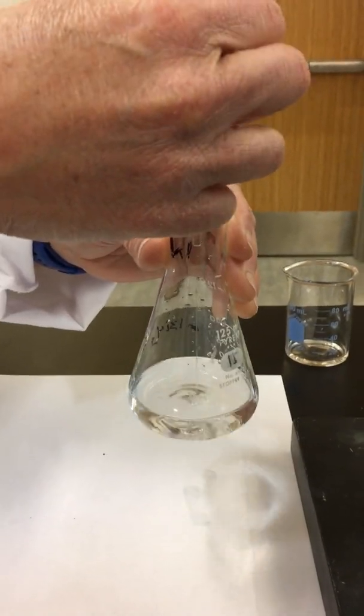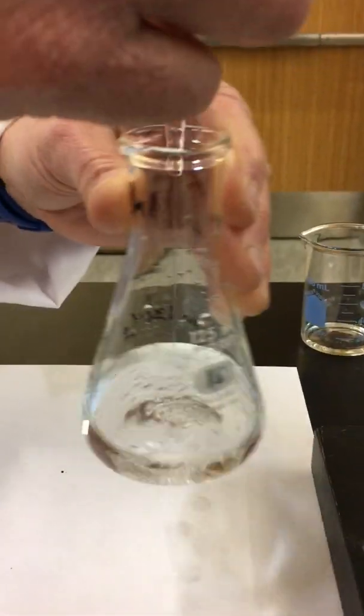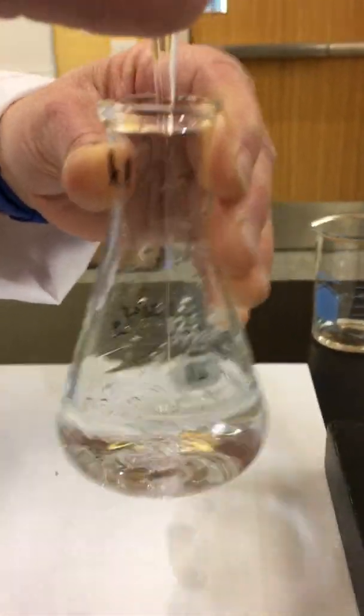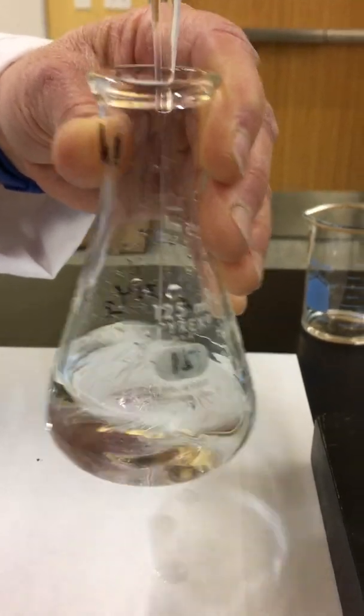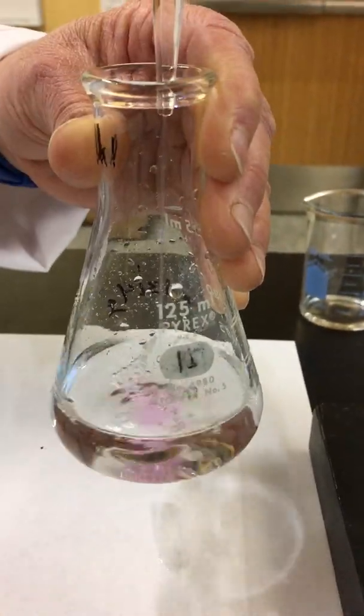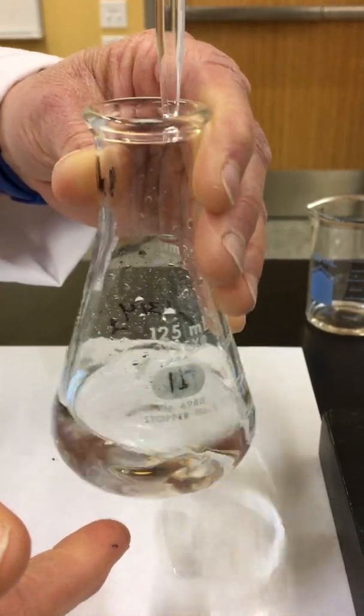We're slowly going to start adding our sodium hydroxide to our oxalic acid. Notice initially, I'm going pretty fast, and the reason is you don't really see any pink color. As we start to get closer to our endpoint of titration, you're going to notice a pink color starting to show, but by swirling it, we see that it disappears.